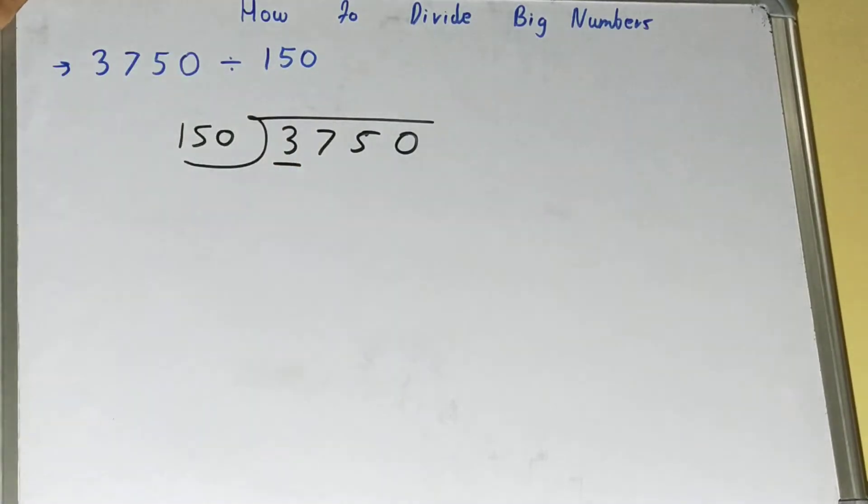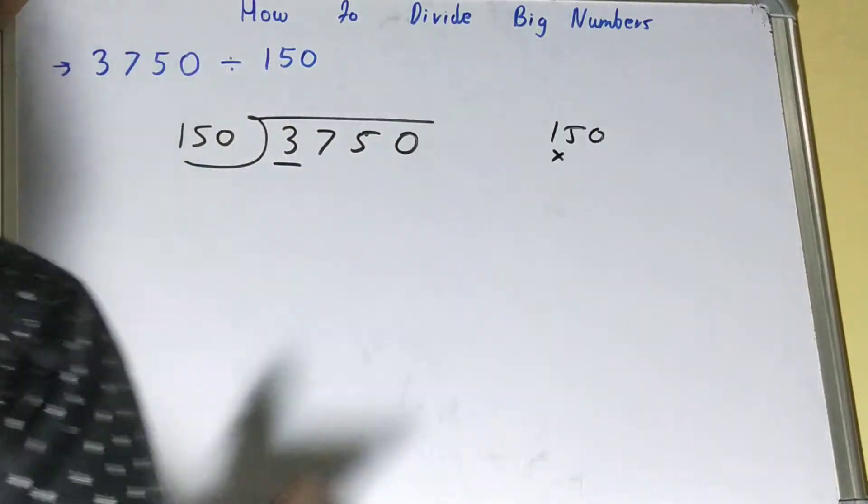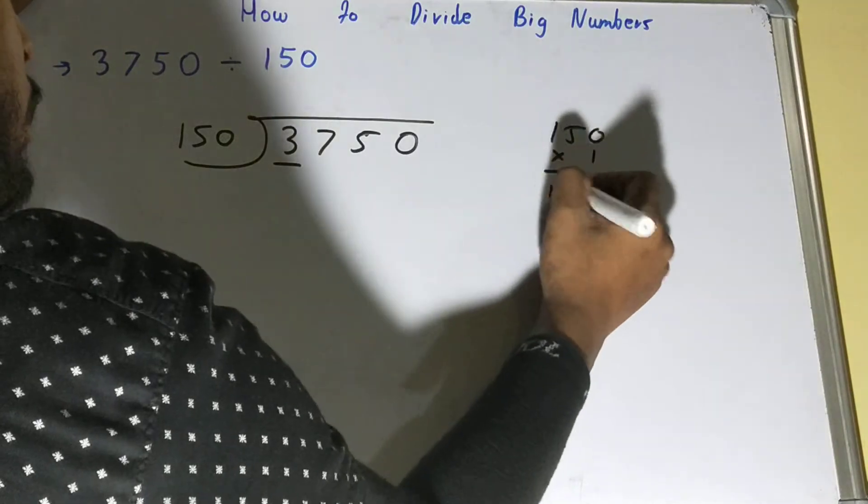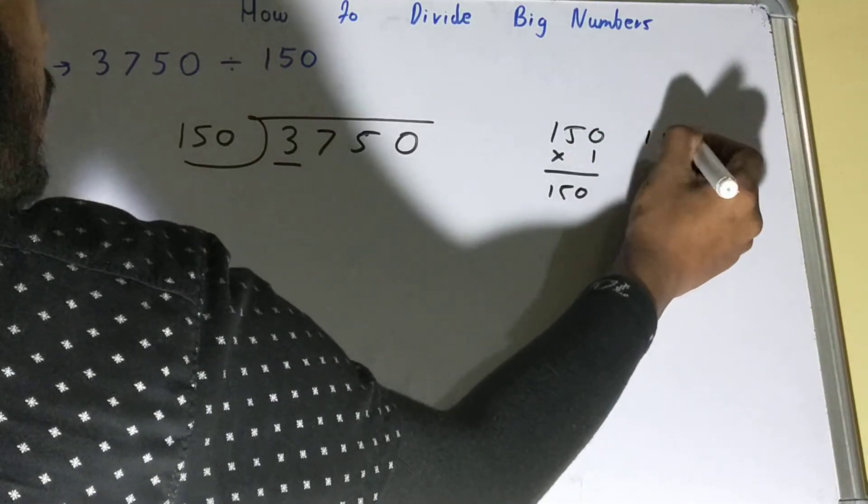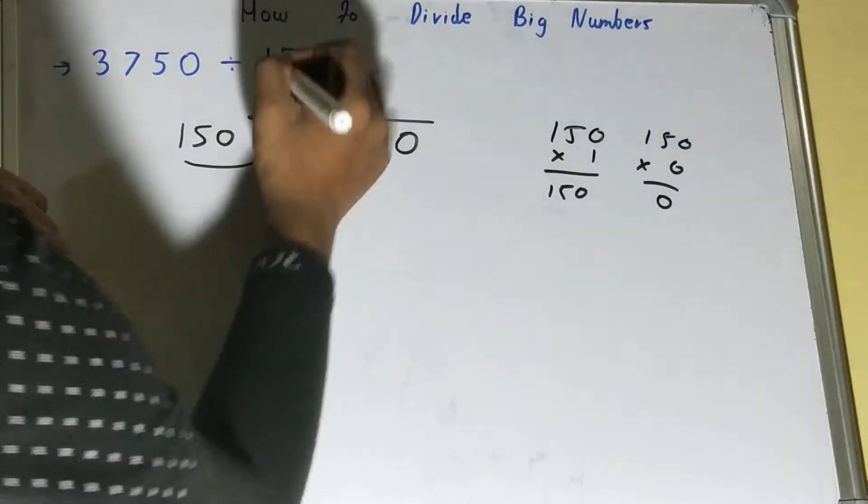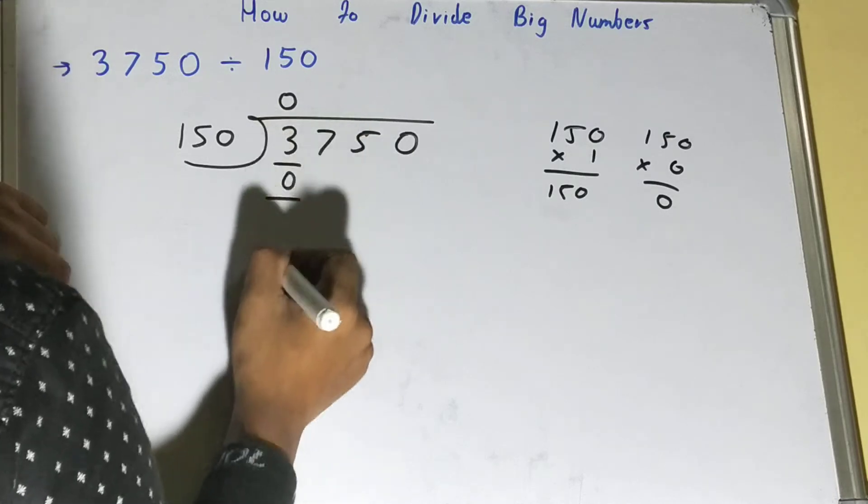So you need to multiply 150 by something that will be less than 3. So 150, but if you do 150 into 0 it will be 0, which is less than 3, right? So we'll write 0. It will come as 0 and you have the remainder as 3.